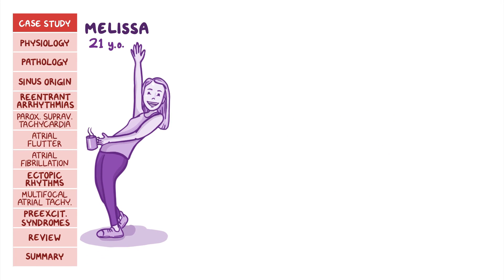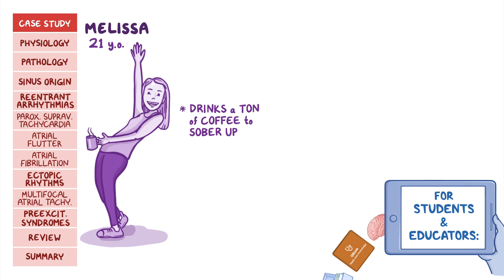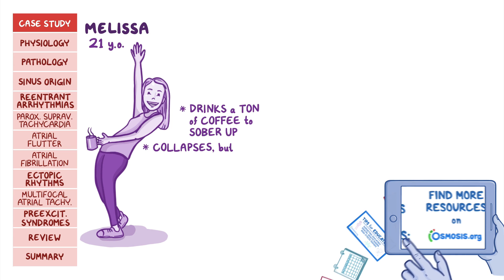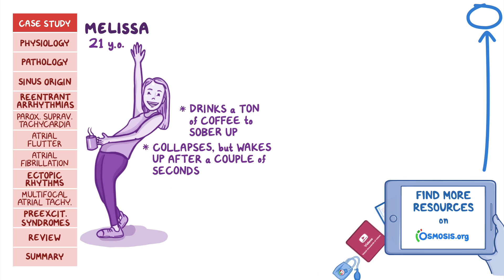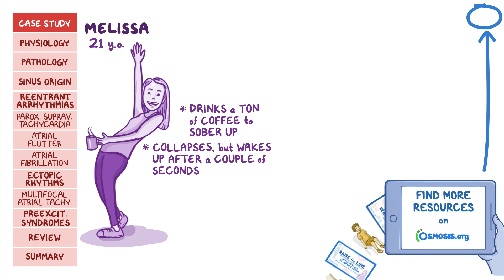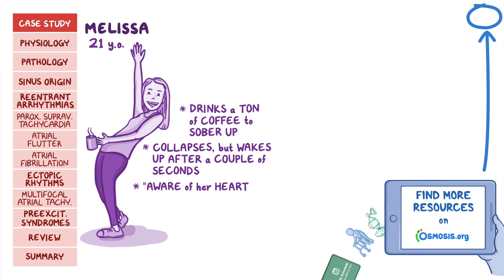Melissa is a 21-year-old college student who's having the time of her life at a party. It's late, and unfortunately she has class the next morning, so she drinks a ton of coffee to sober up. On her way out, Melissa collapses to the floor, but wakes up after a couple of seconds. On her way to the emergency room, she tells the paramedics that she's aware of her heartbeat.